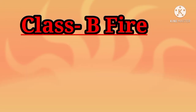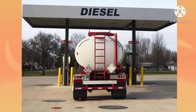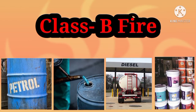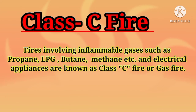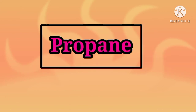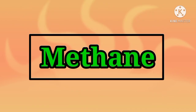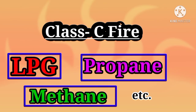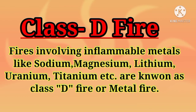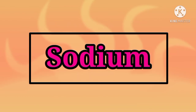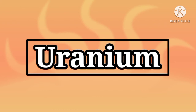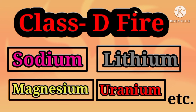Fires involving inflammable liquids such as petrol, kerosene, and diesel are known as Class B fire or liquid fire. Class C fire or gas fire occurs due to gases like propane, butane, LPG, and methane. Fires involving inflammable metals like sodium, magnesium, lithium, uranium, and titanium are known as Class D fire or metal fire.